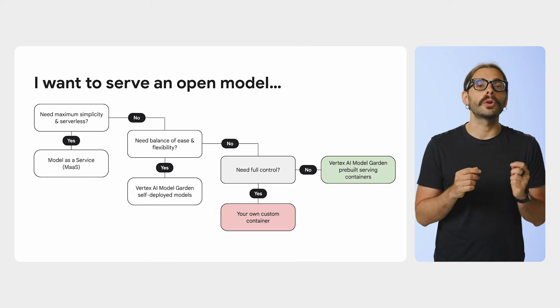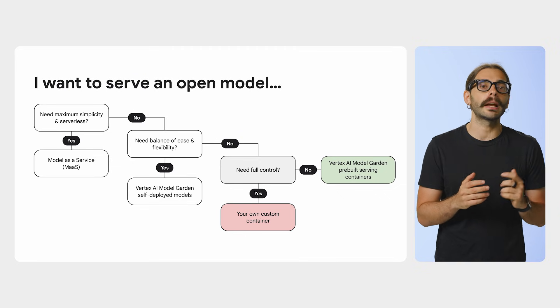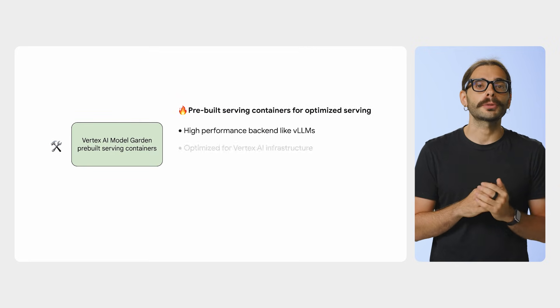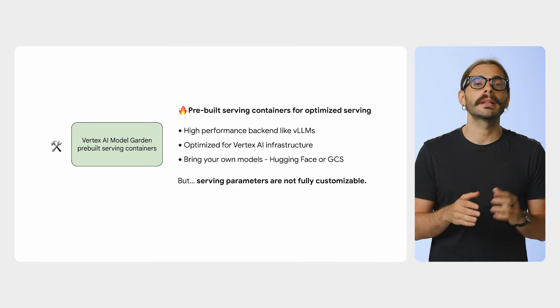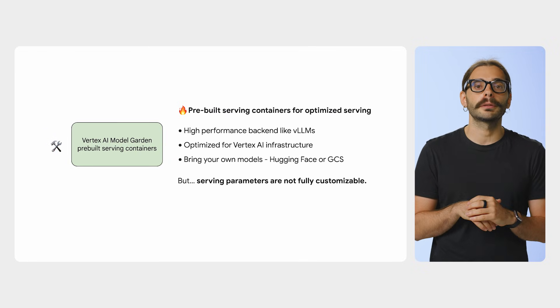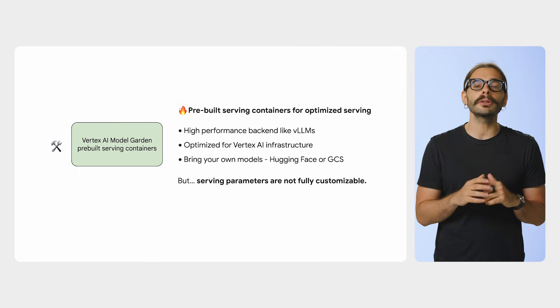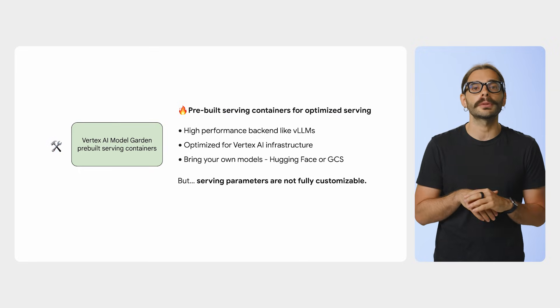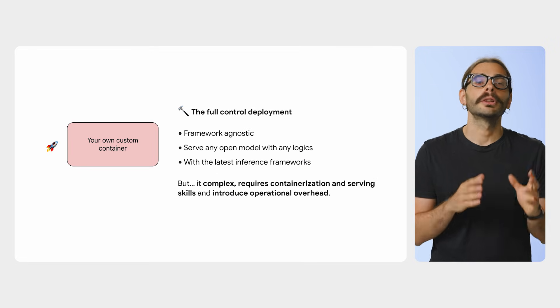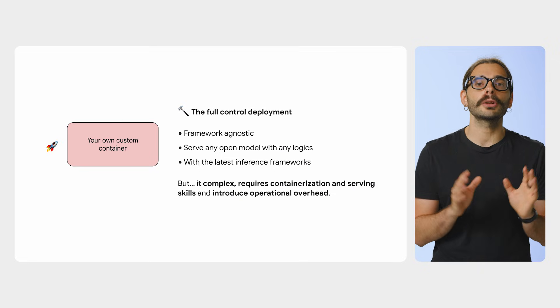Finally, for those who need control, performance, or have fine-tuned a model and want to deploy it, your path leads to container-based serving. Here we have two powerful options. First, using pre-built optimized containers that leverage backends like VLLM or SGLang — you get great performance without building the container yourself, though the trade-off is that the number of deployment parameters you can tweak is limited to what those containers expose. For full flexibility and control, you can serve with your own custom container, where you can package any model, use any framework, and bake in any custom logic you need. Later, we will have videos showing you how to build these containers from scratch for both GPUs and TPUs.